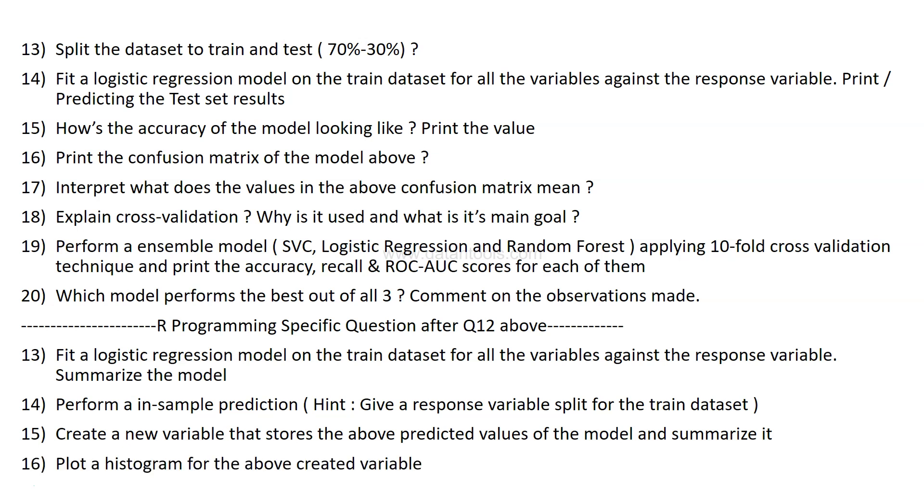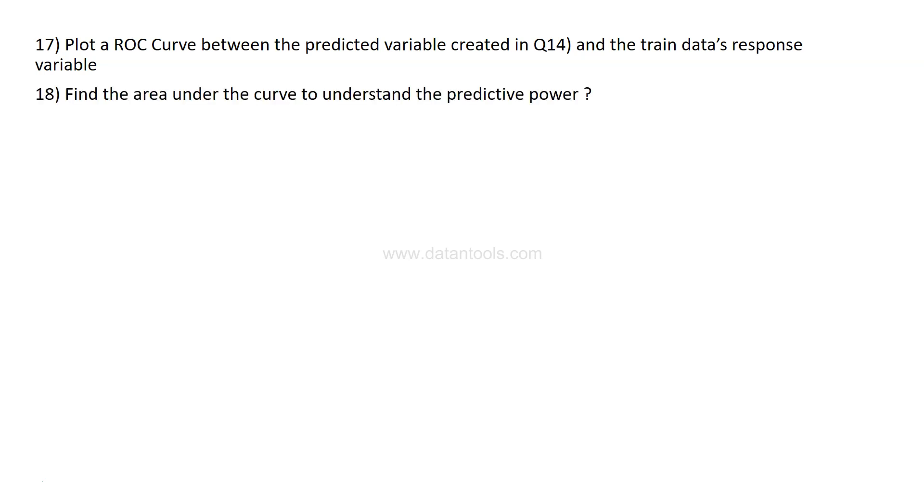After that, plot a histogram for the above created variable. Next question: plot the ROC curve between the predicted variable created in question 14 and the train data response variable. Find the area under the curve to understand the predictive power. Very important that you should know about area under the curve. If you're not, then I highly recommend solving these kinds of problems.